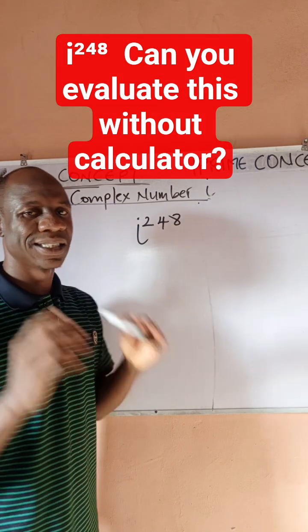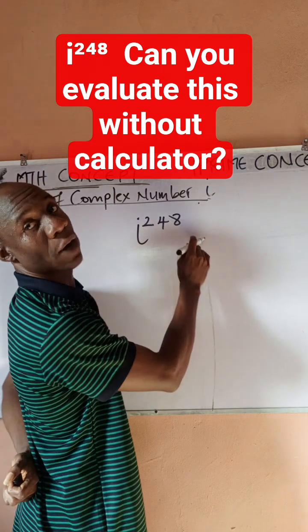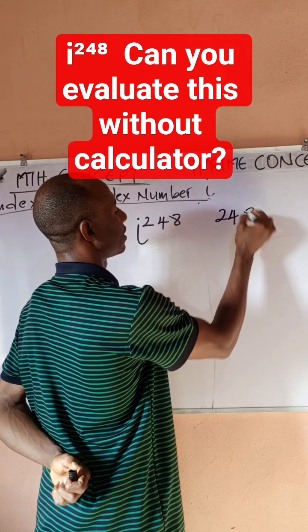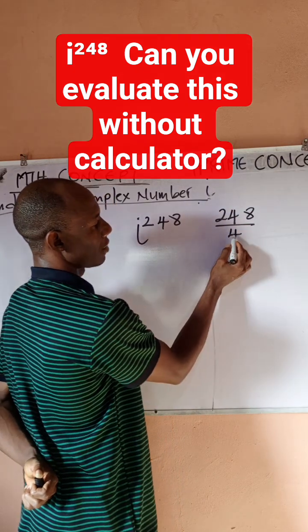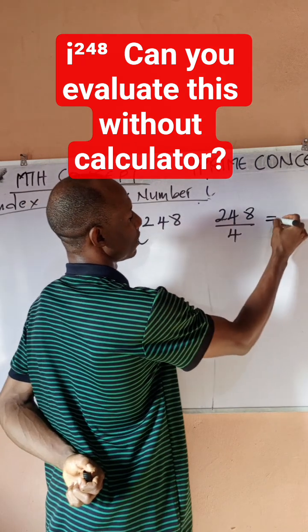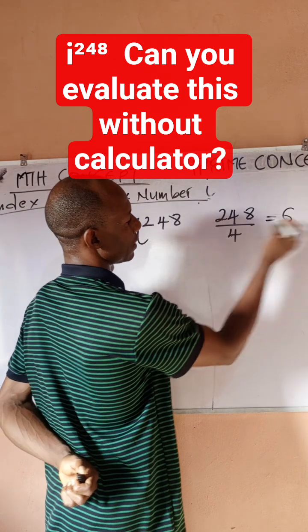When you have a problem like this, a simple thing you do is divide that power by 4. So I have 248 divided by 4. 4 into 24 gives me 6, and 4 into 8 gives me 2, remainder 0.